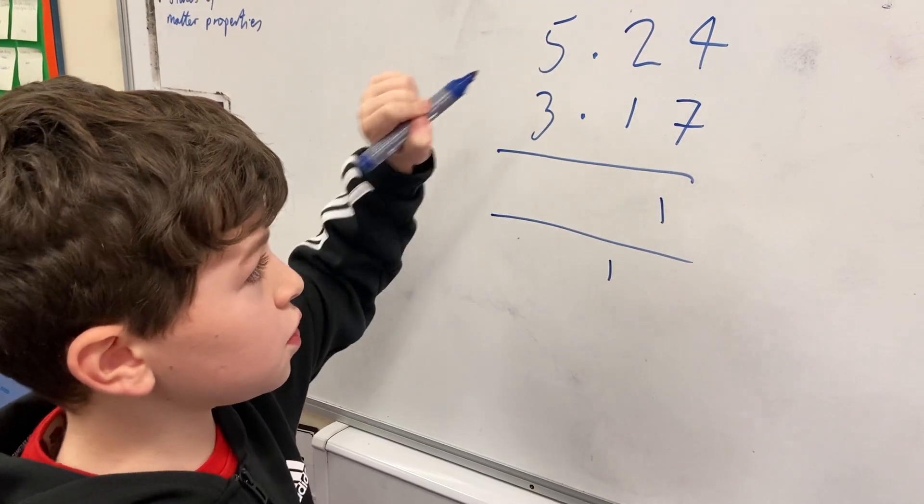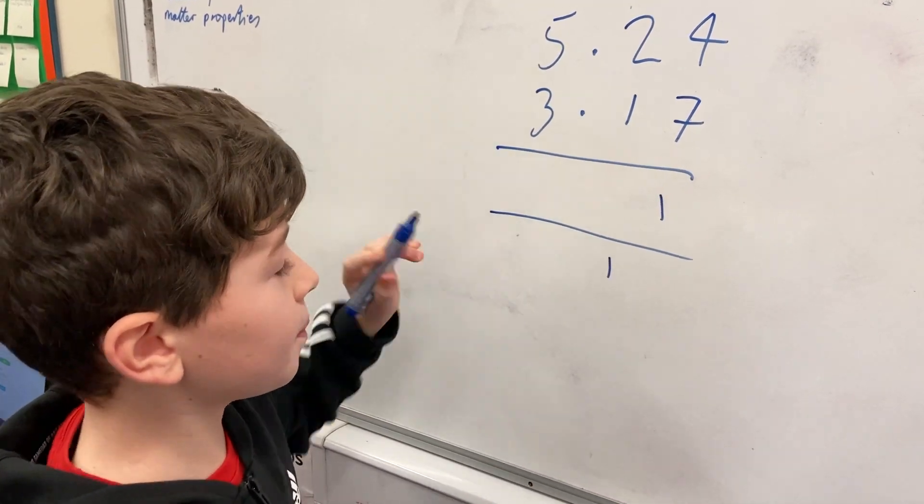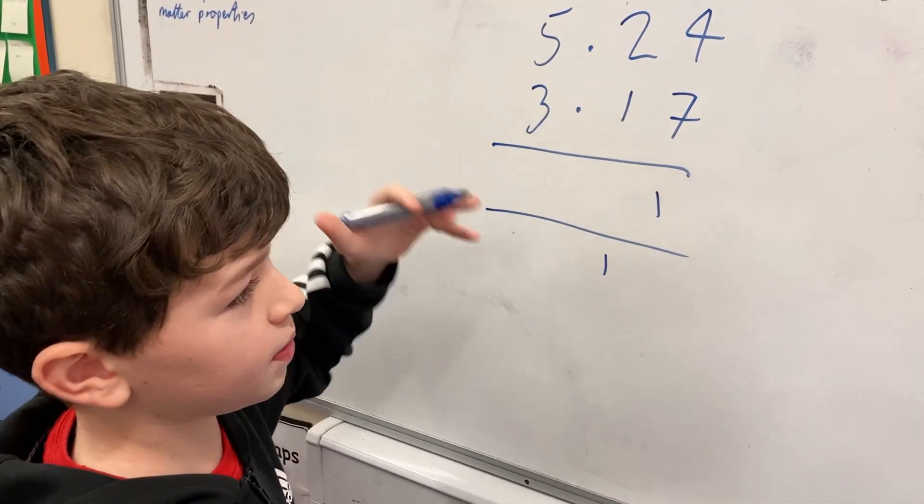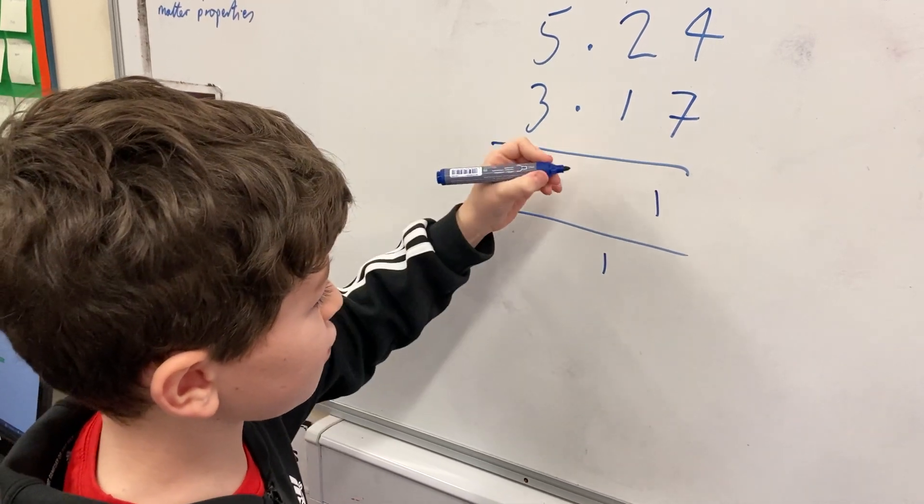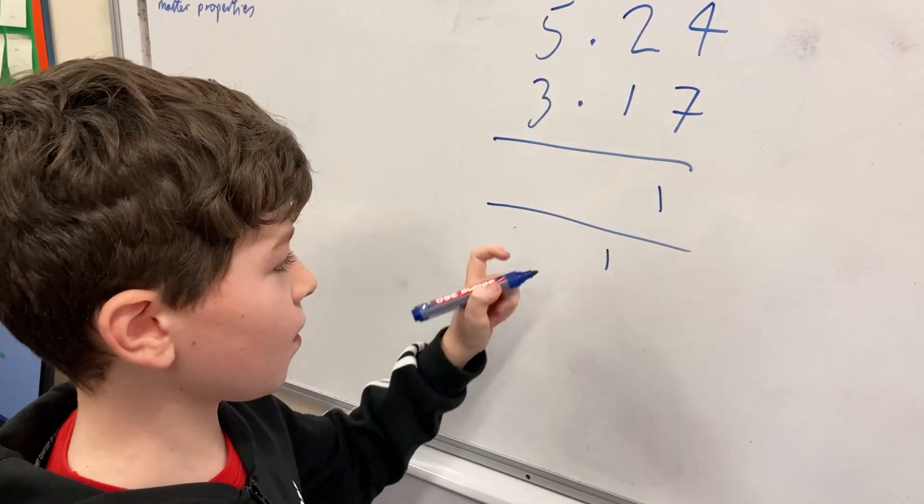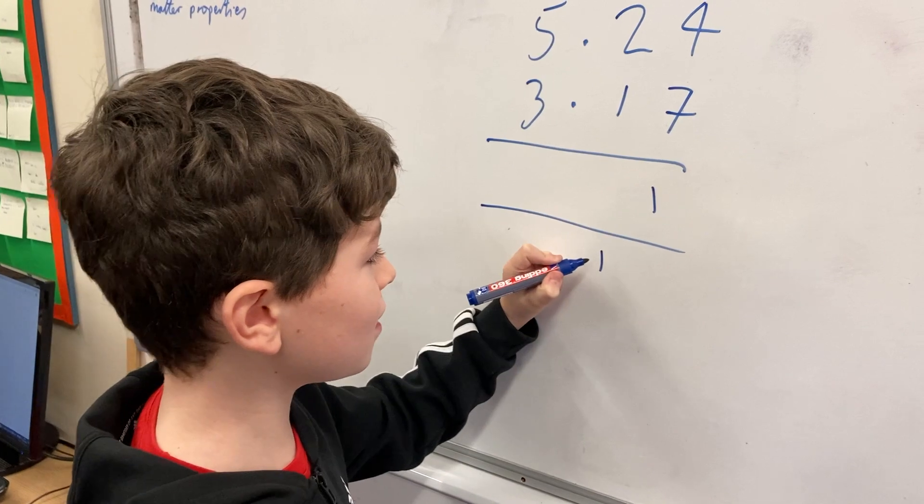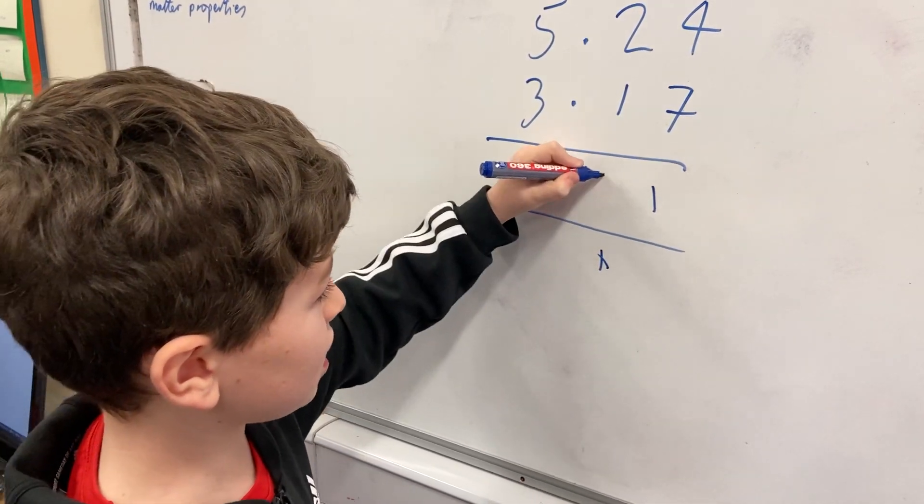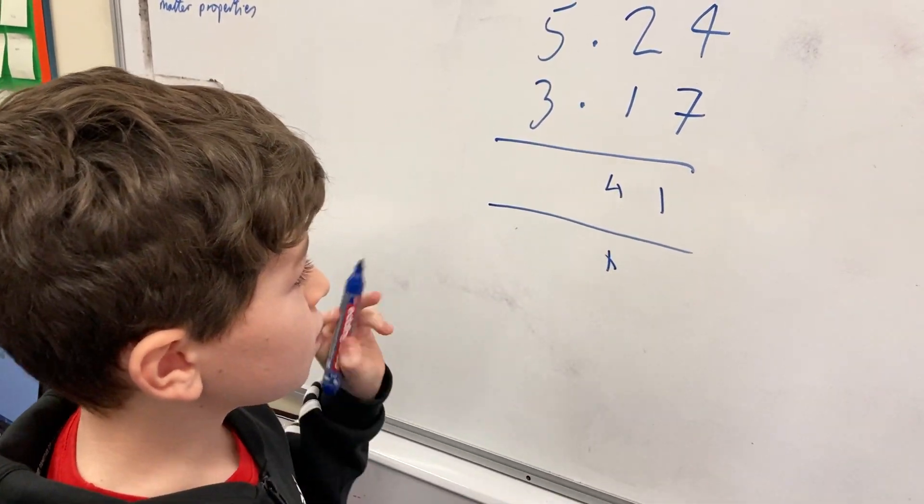Then we've got two tenths plus one tenth, which is basically just two plus one, which is obviously three. But we need to remember about the one we put under there earlier, so it's actually four. Remember to put the decimal point in place.